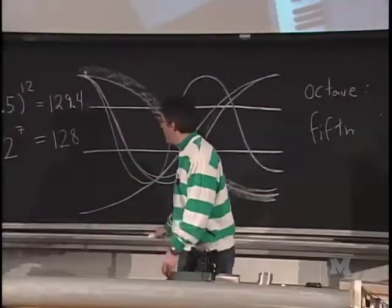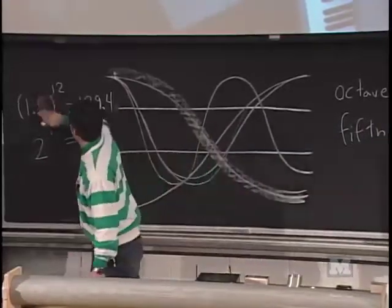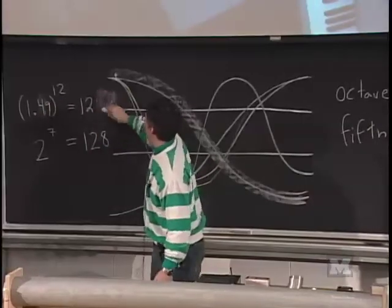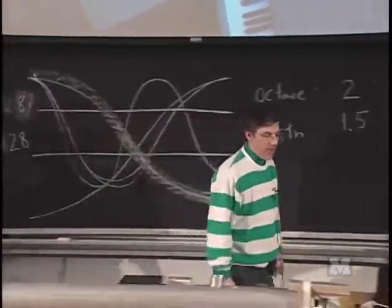And so when you tune a piano, in fact, the octaves are perfect, but the fifths, you actually want this to be a little lower. You make this like 1.49 to the 12th, and then you can make that exactly 128. And then the octaves are perfect, but the fifths are a little flat. That's why we have 12 notes.